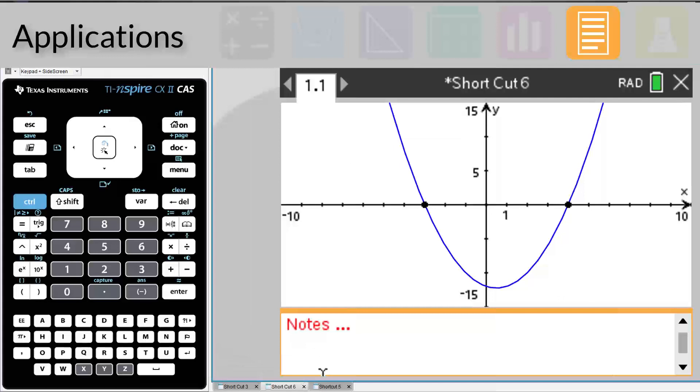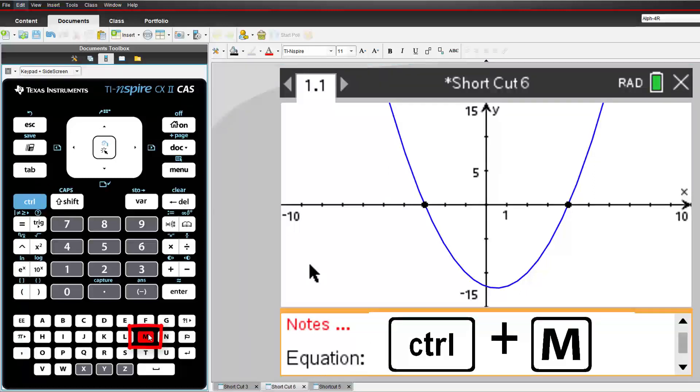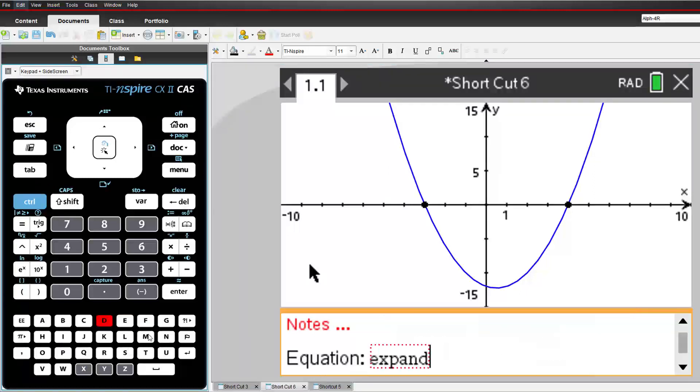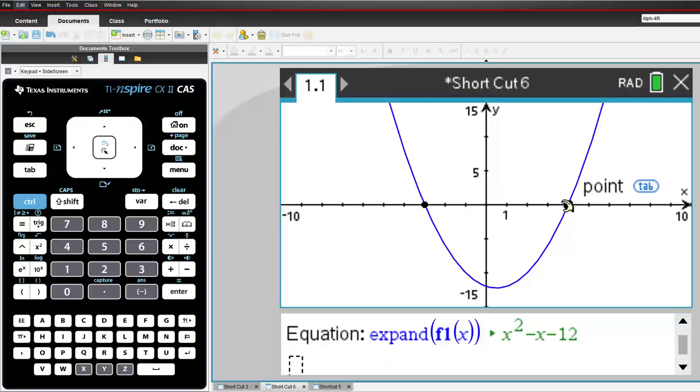Here's a special shortcut, just for the Notes application. The Notes application allows you to go beyond static text. You can insert a math box by pressing CTRL and M. Calculations performed in a math box are responsive to change and update live to reflect changes made elsewhere in the same problem.